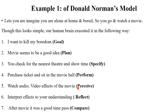Pursue means the current state — you watch the audio and video effects of the movie. Reflect means you interpret the effects to your understanding of how the movie is perceived from a human perspective. And last, compare: after the movie, it was a good time pass. These are the seven stages of Donald Norman's model: goal, plan, specify, perform, perceive, reflect, and compare.